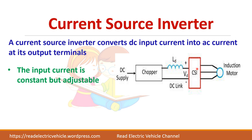This is a current source inverter feeding an induction motor. This is a chopper. If you have a DC supply you can use a chopper directly, or if you have an AC supply you have to use a diode bridge rectifier along with the chopper. The output of the chopper is a controlled DC voltage connected in series with a high value of inductance, the combination of which acts as a constant current source.